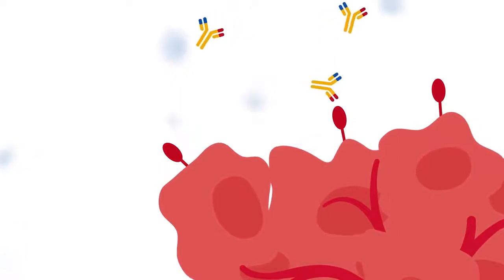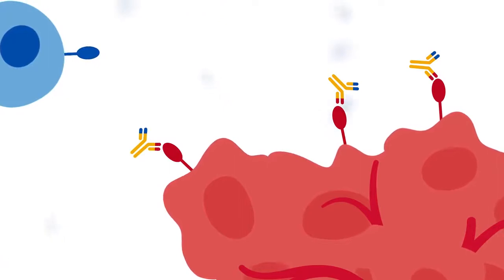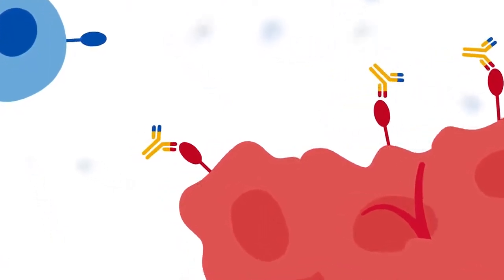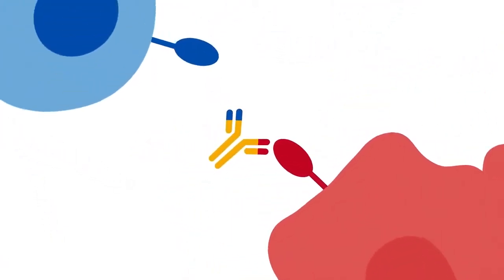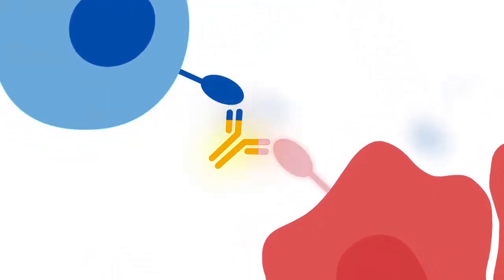The bispecific T-cell engager antibody binds to a distinct cell surface antigen on tumour cells and an activating molecule on T-cells, bringing them into close proximity and forming an immunological synapse.